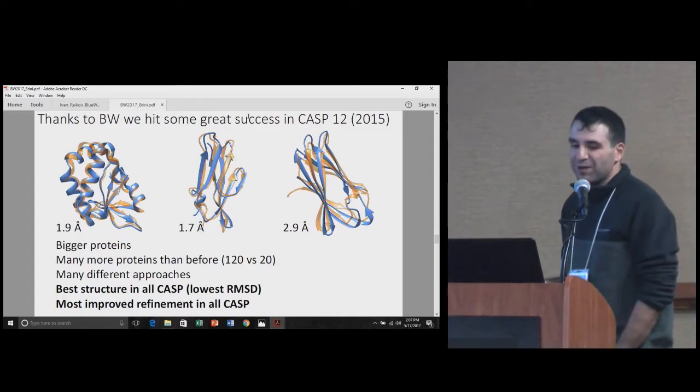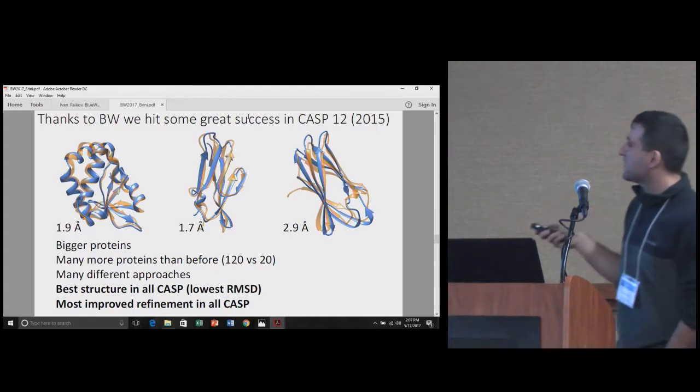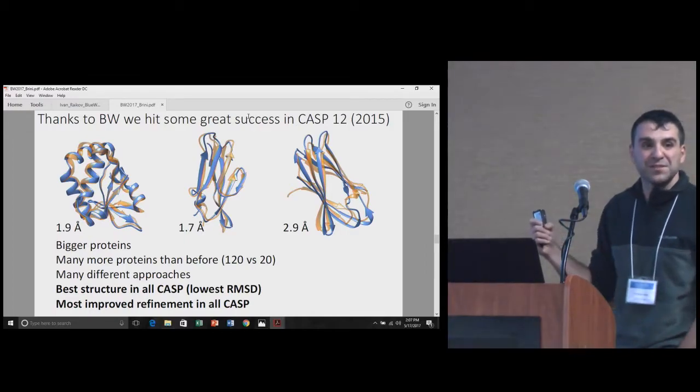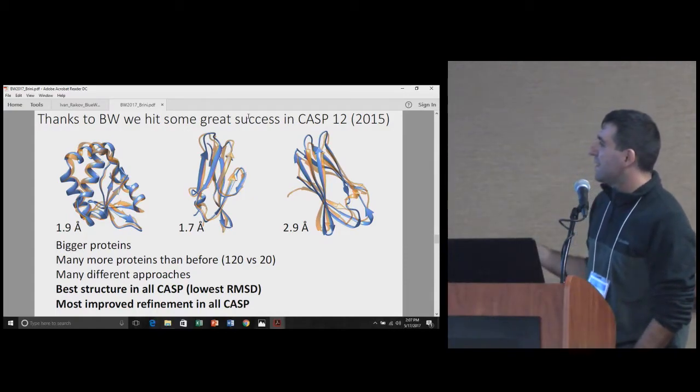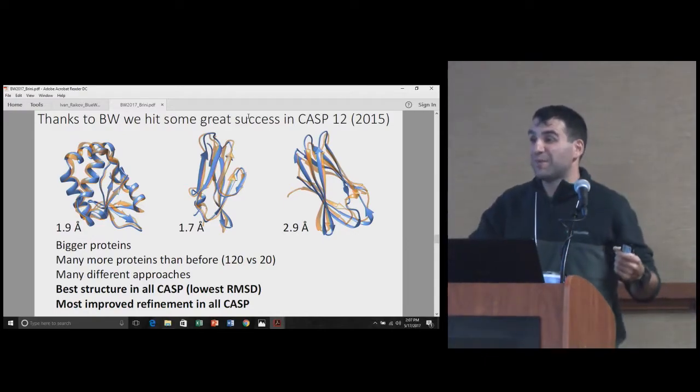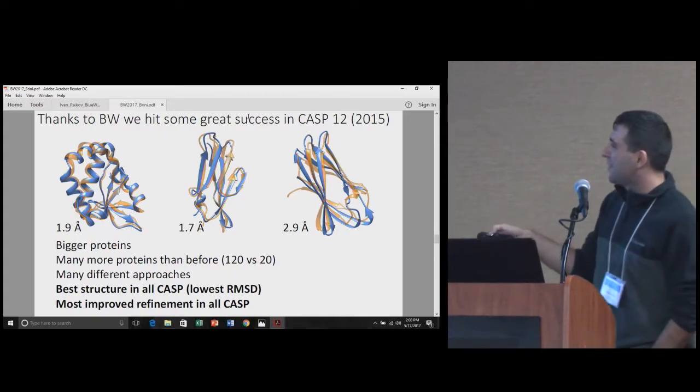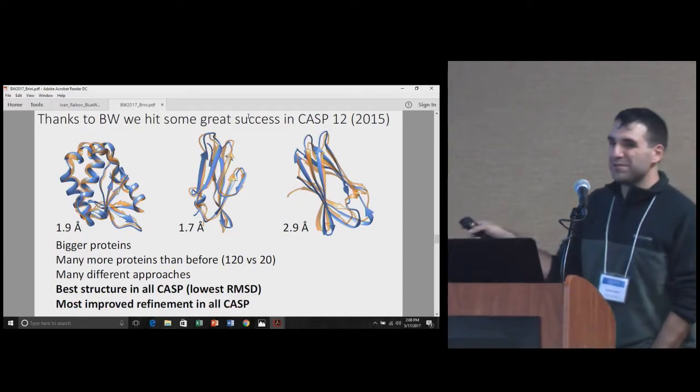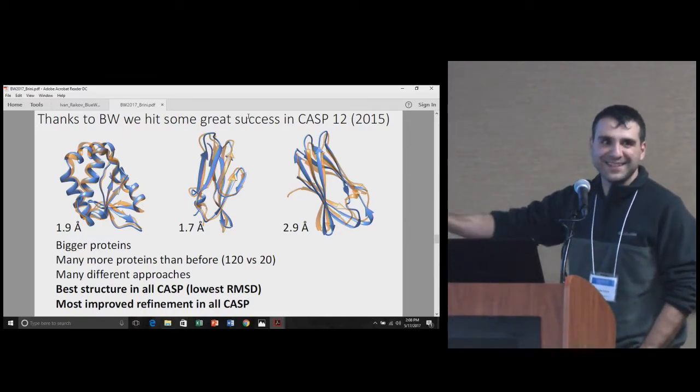Then we got the allocation on Blue Water and we went ballistic last year on CASP. In CASP 12, we were able to run 120 different proteins in the three months of the competition, instead of the 20 we did three years ago. We ran much bigger proteins. We were able to test many different approaches. Because we have so much computational power thanks to Blue Water, all this would be basically impossible anywhere else. Out of this competition, this huge effort, it's actually three months of full work on CASP and then two years of working and understanding your results.